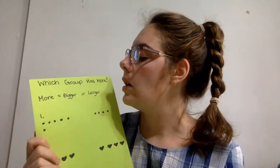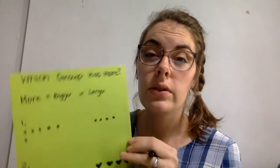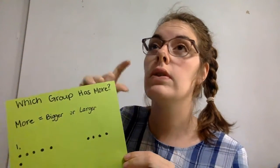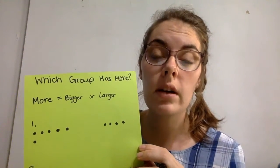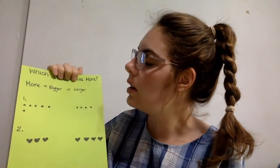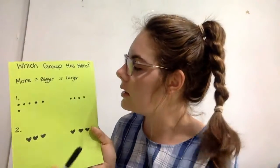Today in your Google Slides you're going to be dragging a circle over the group that has more, and then you're going to be picking which number is bigger. Let's look at number one here together.